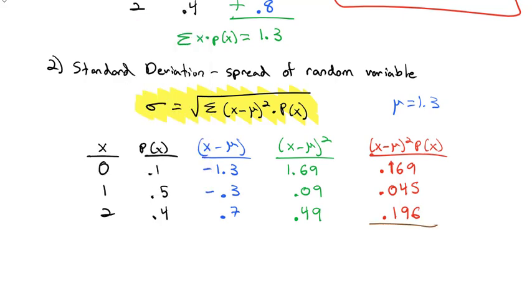And our formula says let's find that sum. Our formula wants the sum of the difference squared times the probability, which is equal to 0.169 plus 0.045 plus 0.196 is 0.41. And we're told the standard deviation is the square root of that value, the square root of 0.41, which is equal to 0.6403.